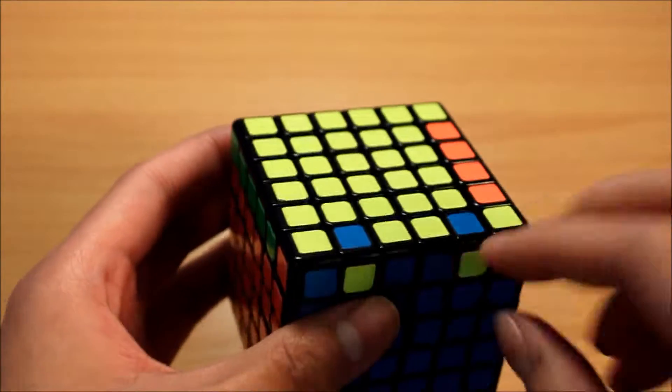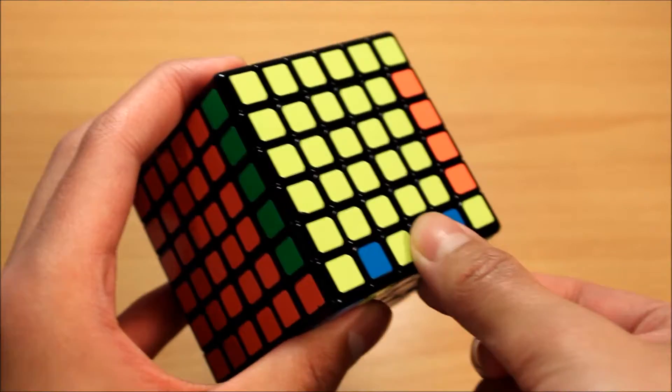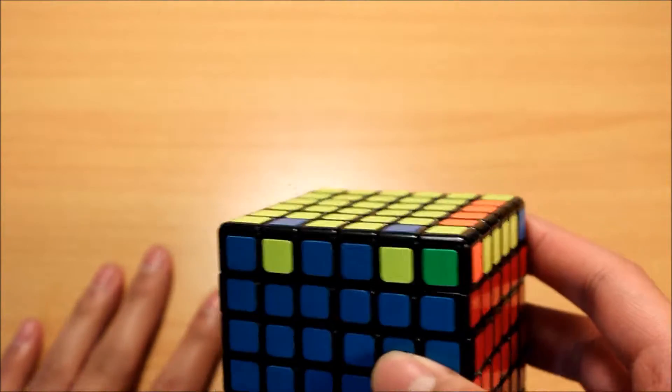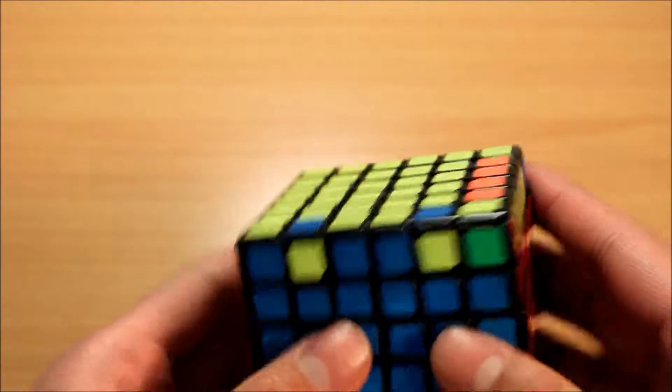But if we flip these two inner edges, then that's it. There's no double parity for OLL, so that's pretty simple.